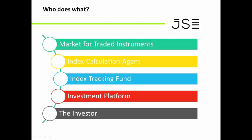Then we have an index tracking fund. This is normally an asset manager or an investment bank who would put together a fund — normally some kind of unit trust or ETF structure. That would be a pooled fund where they take money from lots of investors — your 100 Rand, your 300 Rand, your 10,000 Rand — put it all into a pool, and then invest that money in the stock market.